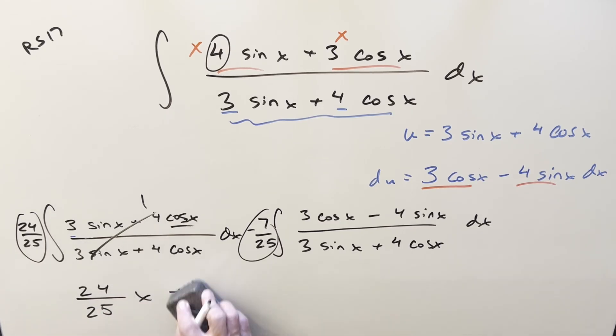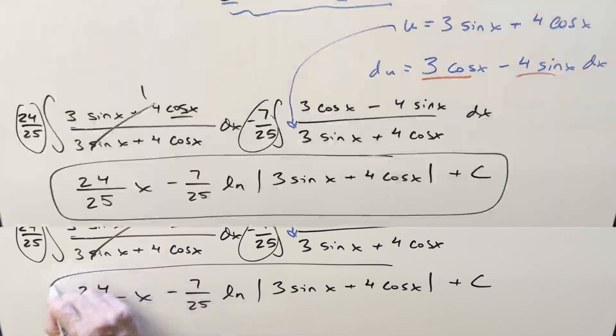And over here, that's going to be minus 7 over 25. But we know what this is. This is just natural log absolute value of u. But we already know what our u is. If we back substitute, it's just the denominator right there. So let me just plug it straight in. So what we have here for our final solution is going to be 24 over 25 x minus 7 over 25 natural log absolute value 3 sine x plus 4 cosine x add a plus c and that's it.